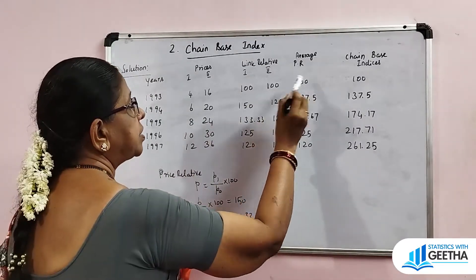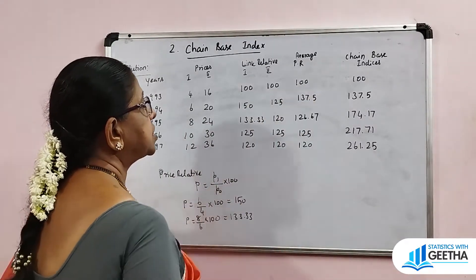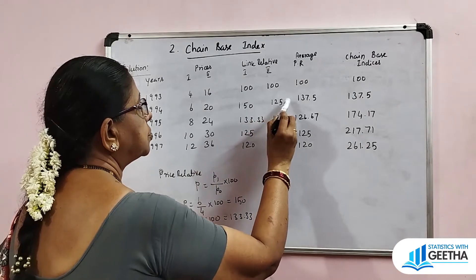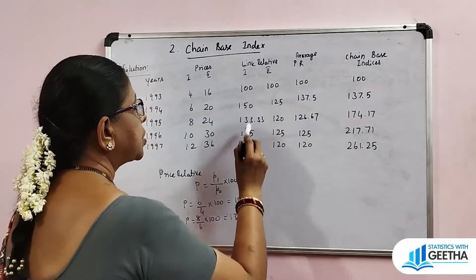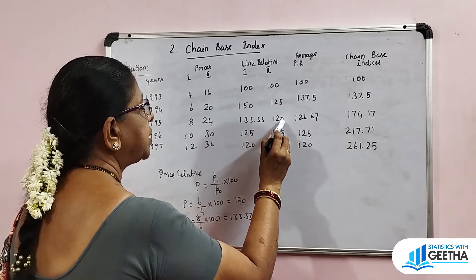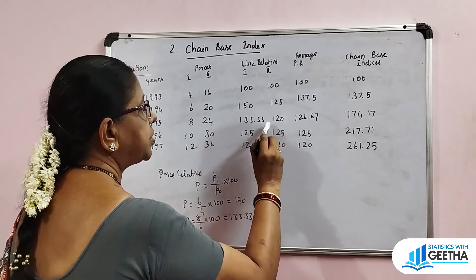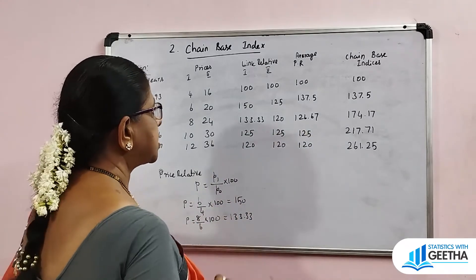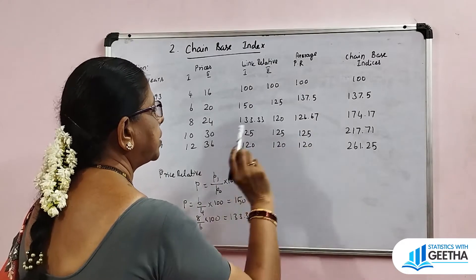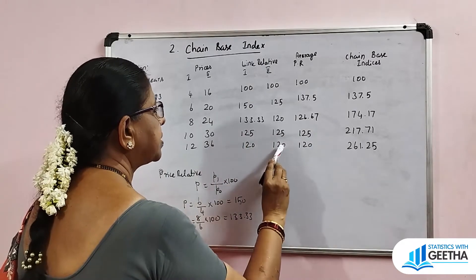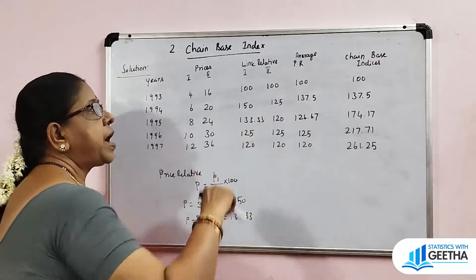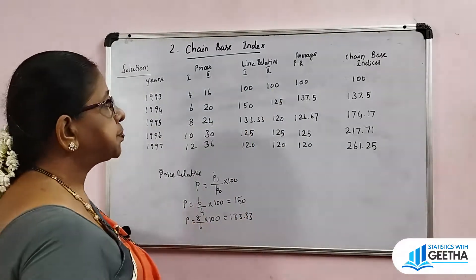For more than one commodity, we take the simple average of the link relatives. So 100 plus 100 divided by 2 is 100. Then 150 plus 125 divided by 2 is 137.5. Then 133.33 plus 120 divided by 2 gives 126.67. Then 125 plus 120 divided by 2. Then 120 plus 120 divided by 2. The average of price relatives is computed for each year.